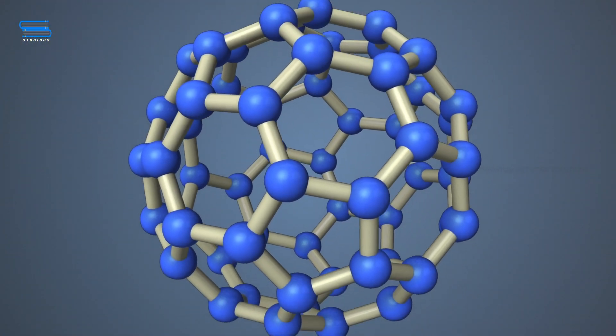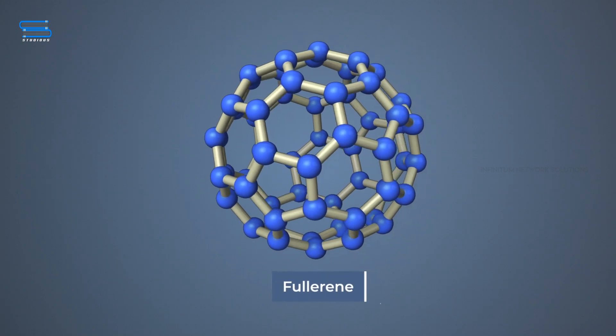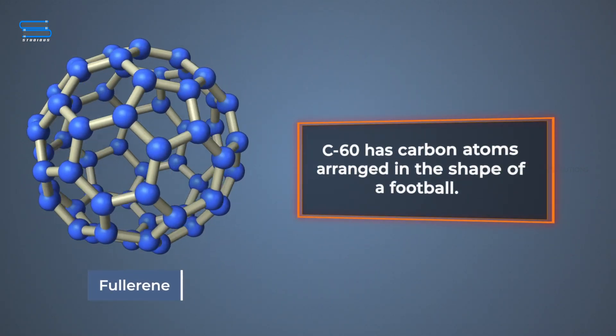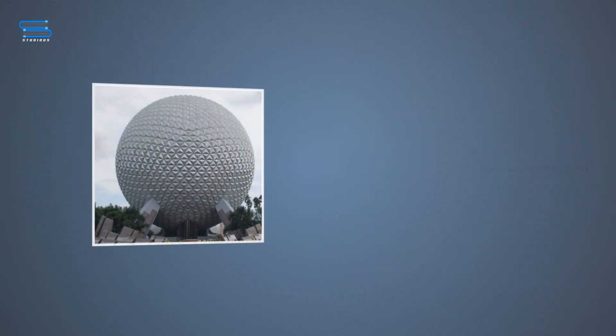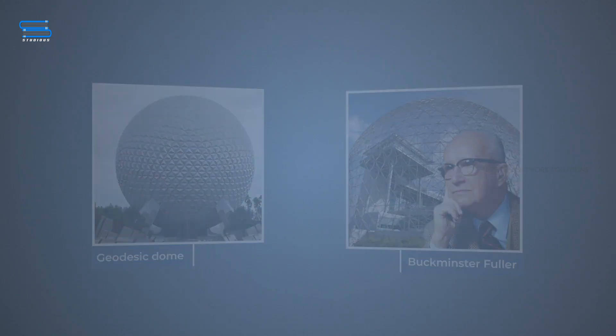Fullerenes form another class of carbon allotropes. The first one to be identified was C60, which has carbon atoms arranged in the shape of a football. Since this looked like a geodesic dome designed by the US architect Buckminster Fuller, the molecule was named Fullerene.